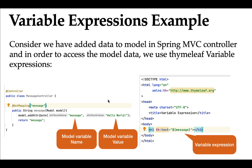The model has an addAttribute method that takes two parameters: the attribute name and the attribute value. We store the data in the model using addAttribute, passing an attribute name and attribute value. This handler method returns the 'message' template view name. In the Thymeleaf HTML template, we access the model data using a variable expression — dollar within curly braces — passing 'message', which corresponds to the attribute name set in the controller.